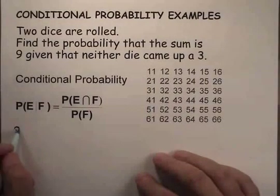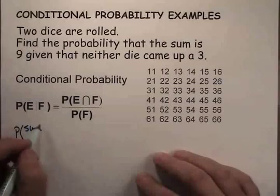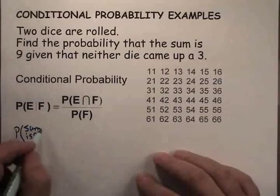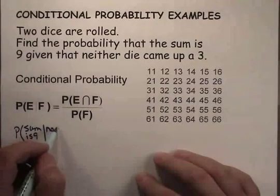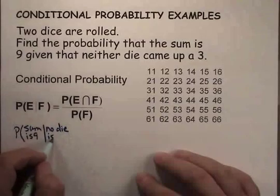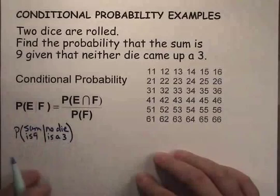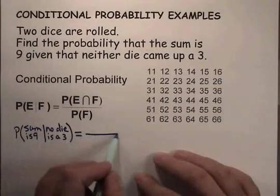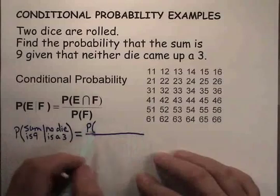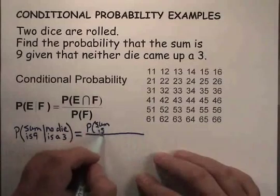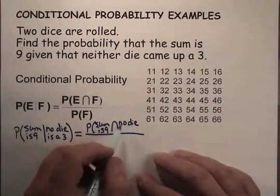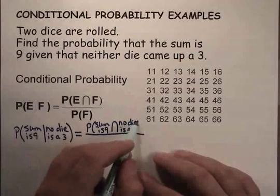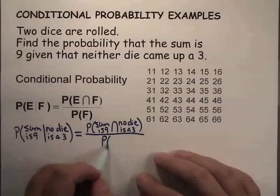Our problem: the event we're calling E in the formula is the probability that the sum is 9, given the event we're calling F is that no die is a 3. That is a quotient, and the numerator is the probability that the sum is 9 and that no die is a 3, divided by the probability that no die is a 3.